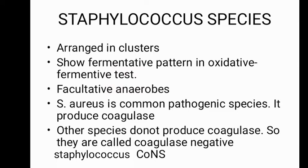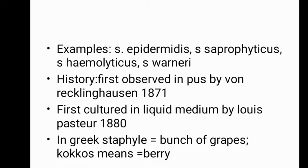Among Staphylococcus species, Staphylococcus aureus is the most pathogenic. It produces an enzyme called coagulase, which forms the basis of the coagulase test. Other Staphylococcus species do not produce coagulase and are therefore called coagulase-negative Staphylococcus. Staphylococcus aureus is called coagulase-positive Staphylococcus, while coagulase-negative Staphylococcus are generally rarely pathogenic to humans.